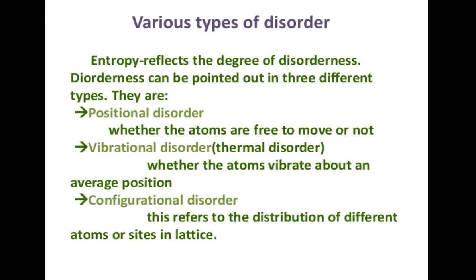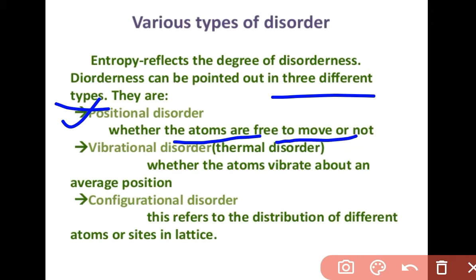Various types of disorder: entropy reflects the degree of disorderness, which can be pointed out in three different types. Position disorder: the atoms are free to move or not. Vibrational disorder, that is thermal disorder: whether the atoms vibrate about an average position. And configurational disorder: this refers to the distribution of different atoms on sites in the lattice.